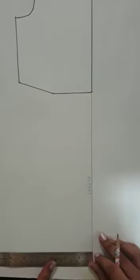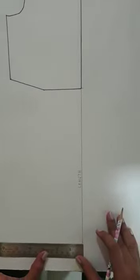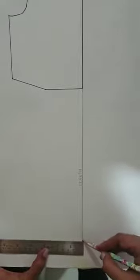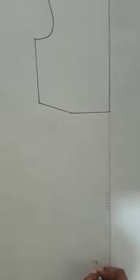Now from the lower end where I have finished marking my length, I am just simply going to square it out so that it marks an approximate idea for my hem line. Now once this is marked, this is where my tentative hem is going to be.